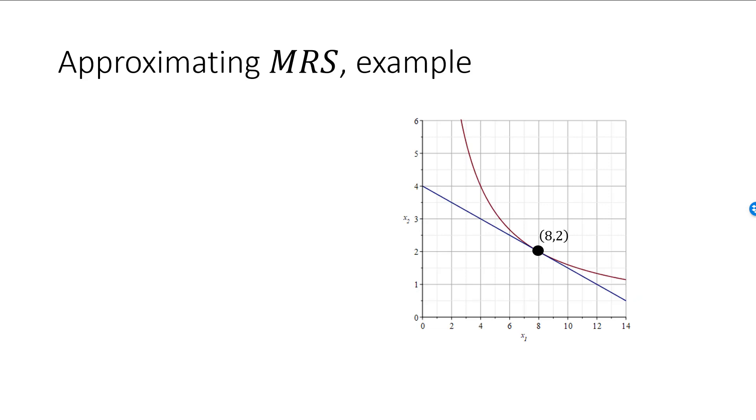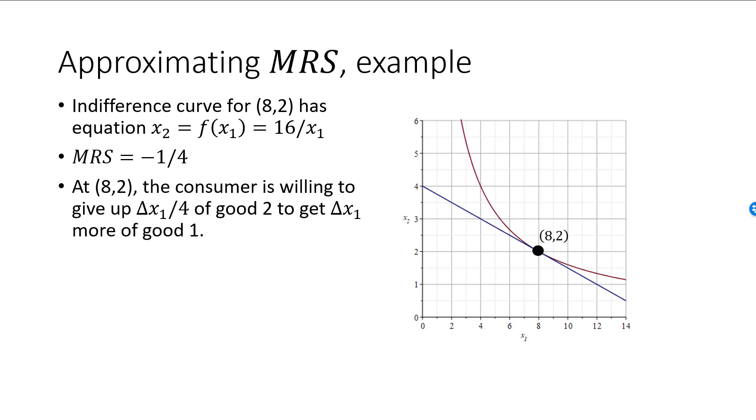Let's look at an example to see how close this approximation is. Let's start with the bundle 8, 2 and an indifference curve given by x2 equals 16 divided by x1. As we have seen earlier, MRS at this point is equal to minus 1 over 4. This means that the consumer is willing to substitute the goods at this ratio. A quarter units of good 2 for 1 unit of good 1. Or if you like, 1 unit of good 2 for 4 units of good 1. This means that the consumer, at the margin, is willing to give up delta x1 divided by 4 units of good 1 in order to receive delta x1 units of good 1.